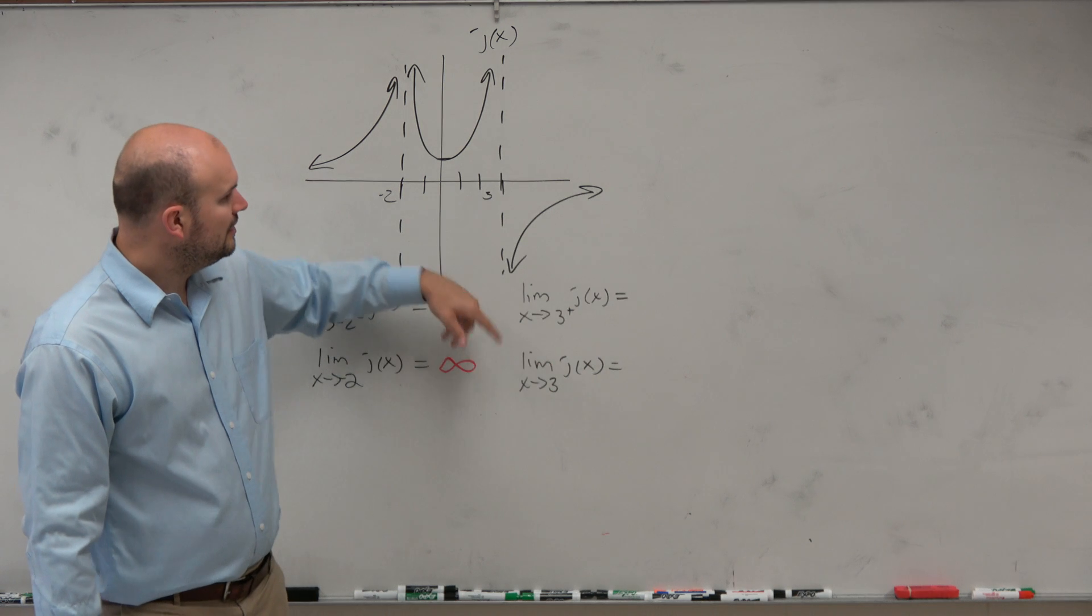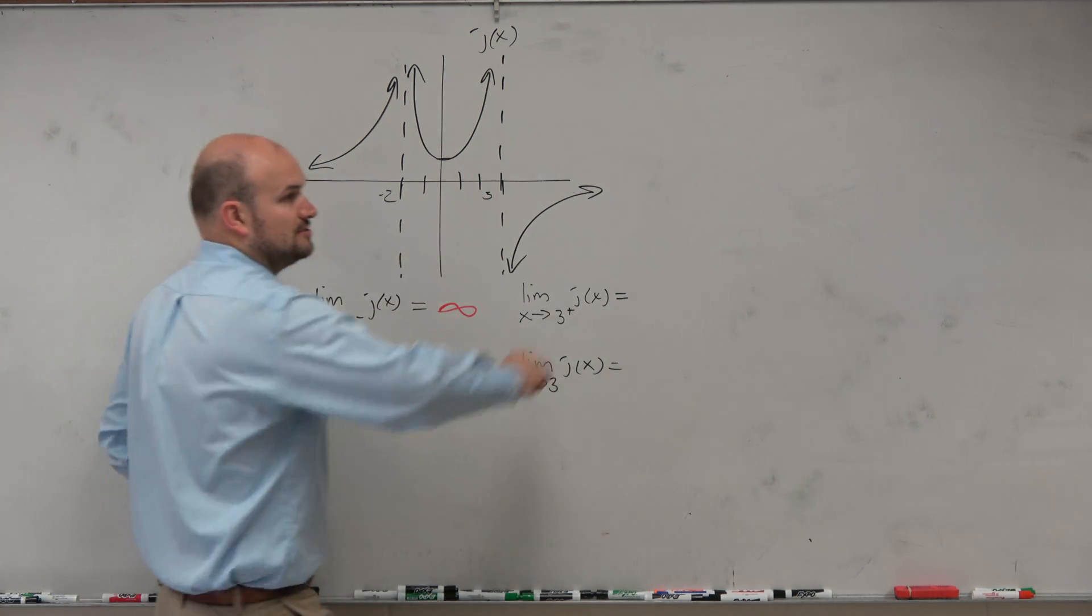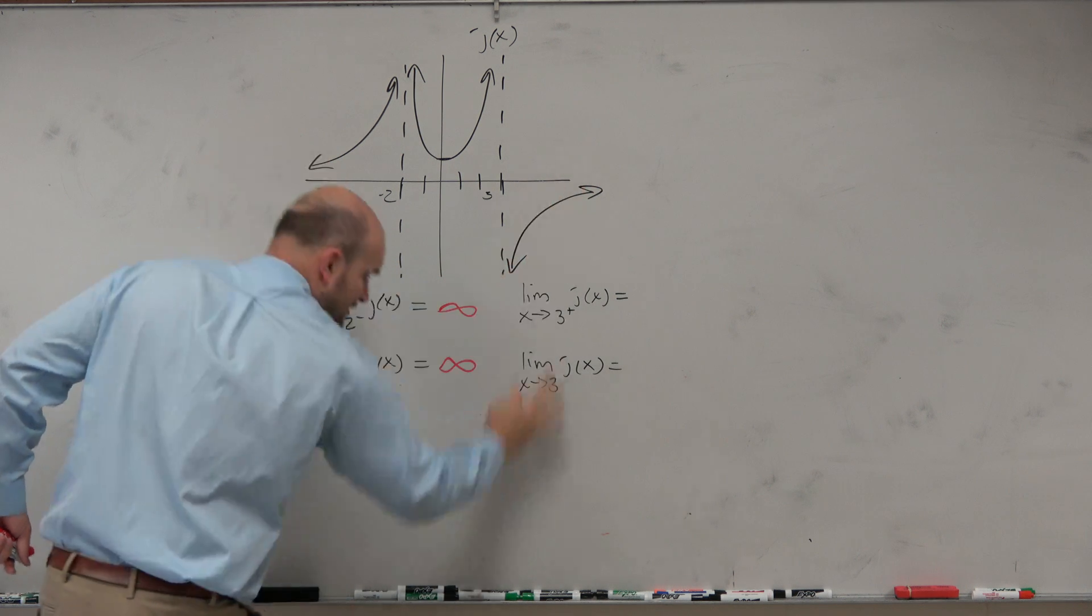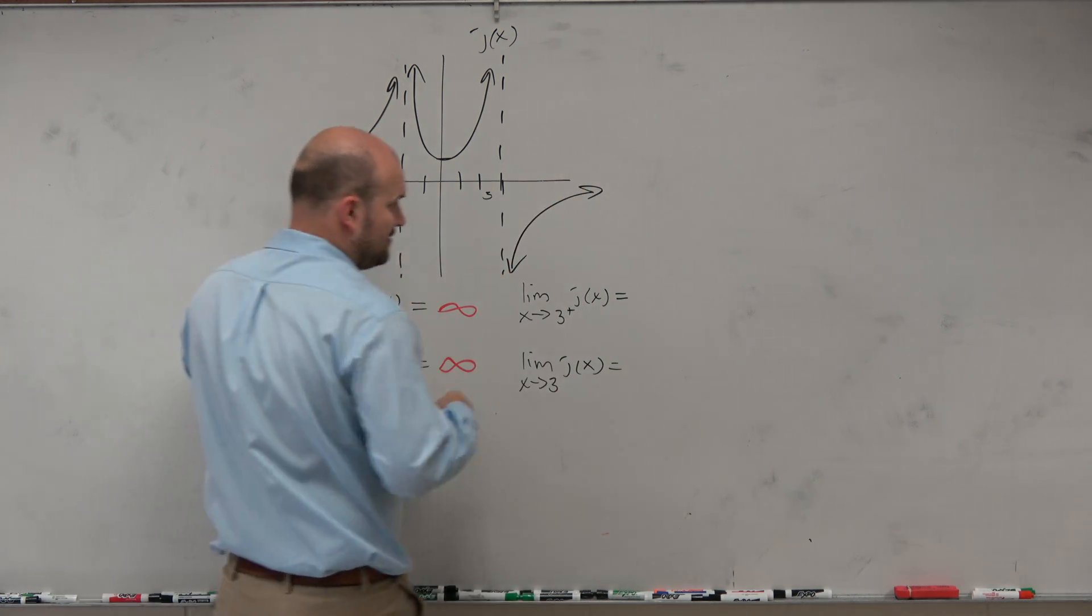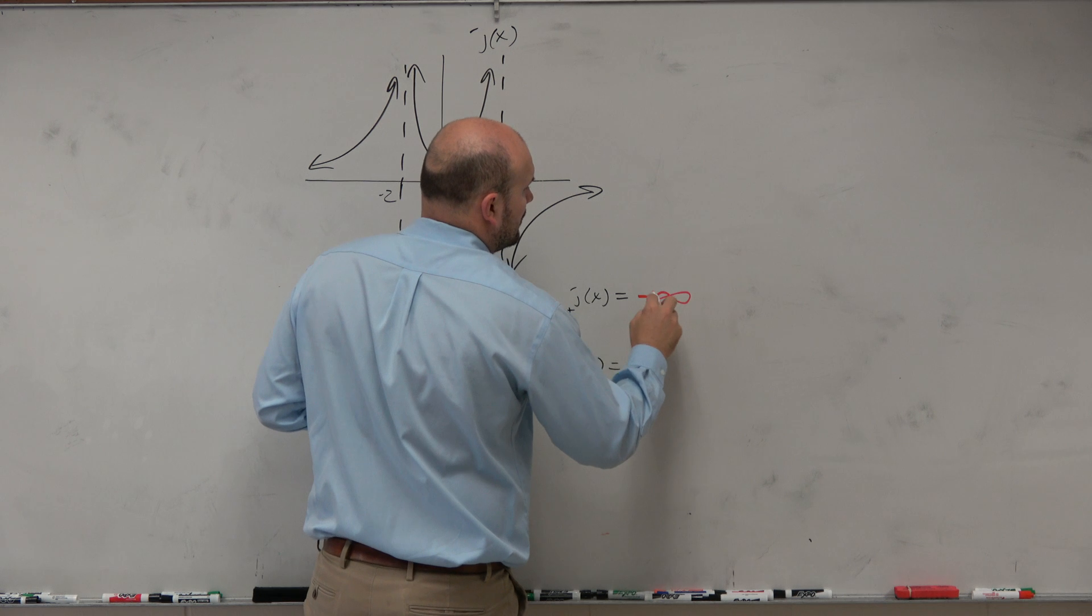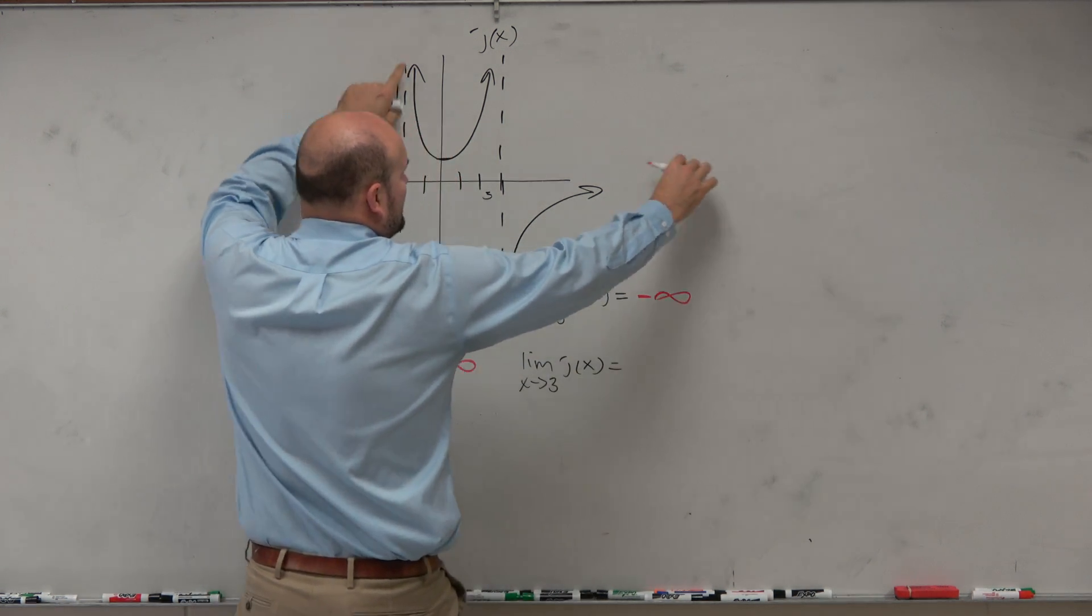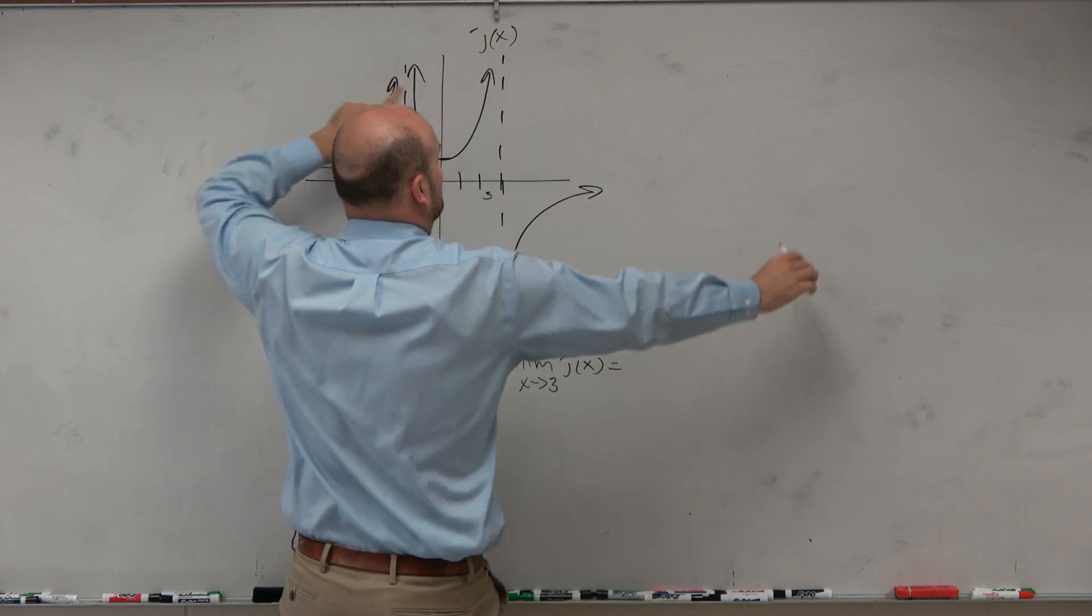Now let's look at 3. So as we approach 3 from the right, so 3 from the right, right hand. As we're getting really close to 3, we're going to negative infinity. Or now, as we're getting closer and closer to 3, we're approaching...